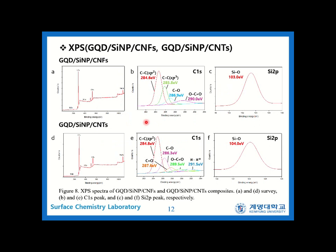In figures 8B and 8E, we could notice the differences between the two composites. The composite using CNFs in figure 8B contained the hybridization function of the sp3 CC bond, which cannot be found in 8E. Also, the pi-pi bond in 8E, which appeared due to electron delocalization in CNTs, cannot be found in 8B.